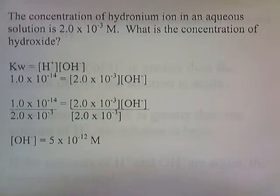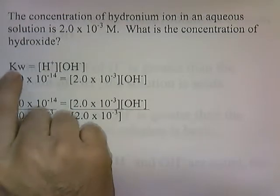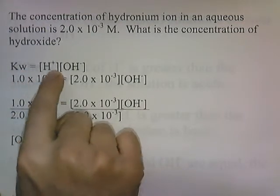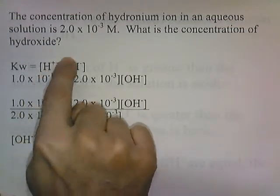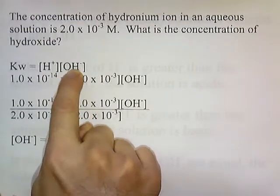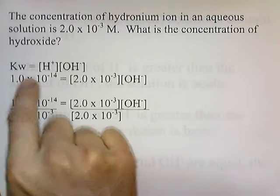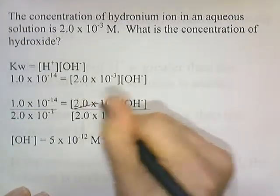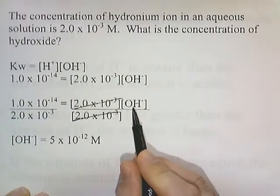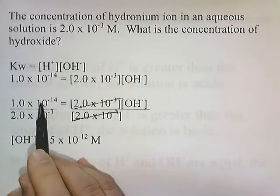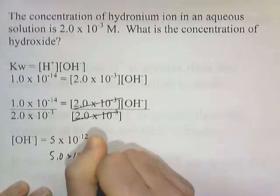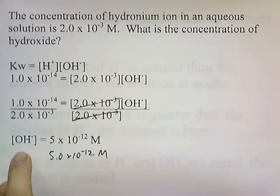Here's a problem: the concentration of hydronium ion in an aqueous solution is 2 × 10⁻³ M. What's the concentration of hydroxide? The formula is K_w = [H⁺][OH⁻]. K_w is 1 × 10⁻¹⁴, and [H⁺] is 2 × 10⁻³. To solve for [OH⁻], divide both sides by 2 × 10⁻³. This cancels out, and the concentration of hydroxide equals 5.0 × 10⁻¹² M.